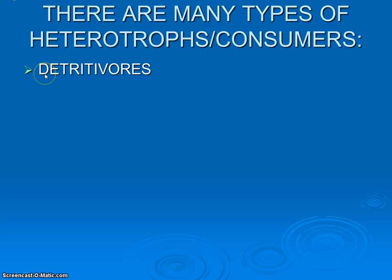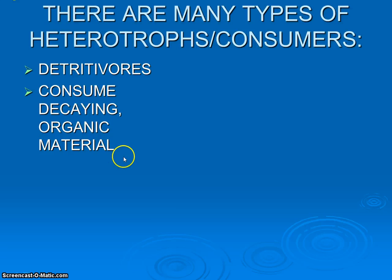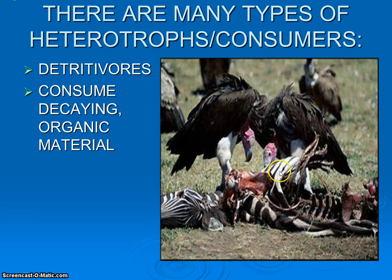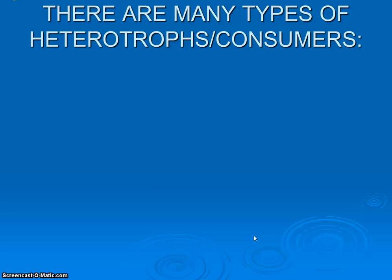Continuing on — this gets a little strange, but it's actually very easy. Detritivores. Detritus — think of it as the decaying stuff left over that nobody really wants, the garbage. They're consuming decaying organic material. A great example: vultures. They are actually eating meat here, but this is after the carnivores have had their fill.